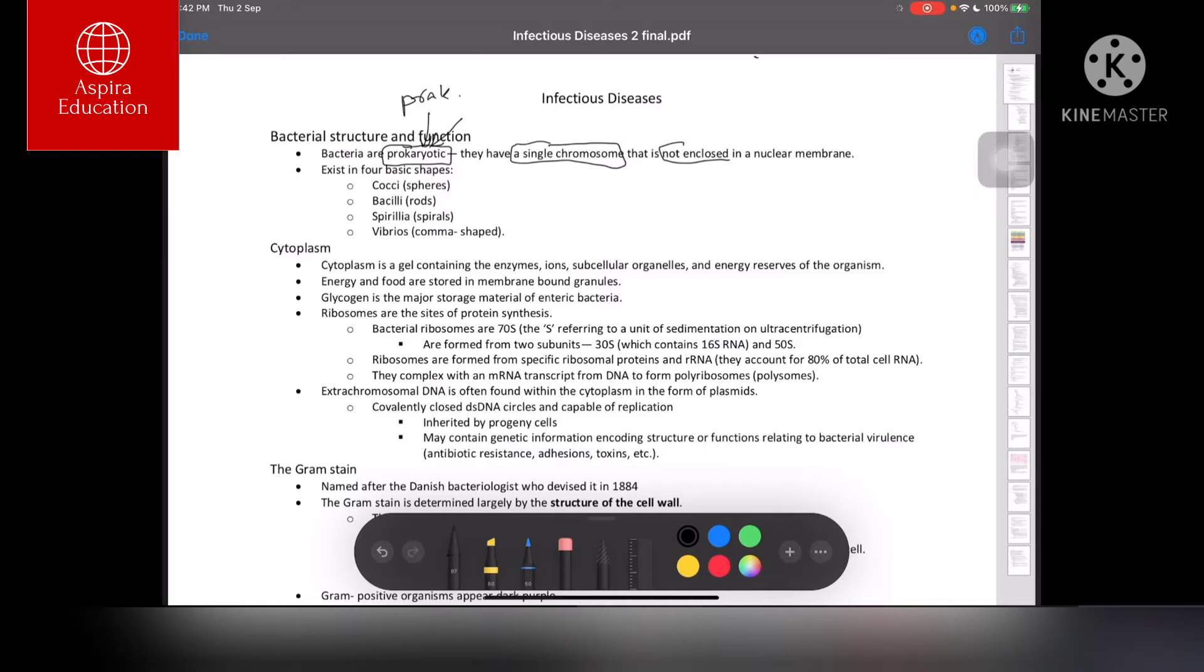Prokaryotic means the cells have a single chromosome that is not enclosed in a nuclear membrane. So the cell contains DNA—this is called prokaryotic, meaning primitive nucleus. They exist in four shapes: cocci which are circular, bacilli which are rod-shaped, spirilla which are spirals, and some are comma-shaped vibrios.